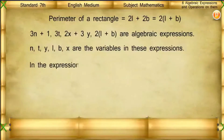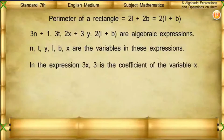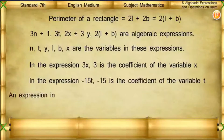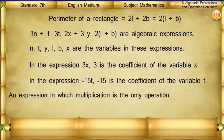In the expression 3X, 3 is the coefficient of the variable X. In the expression minus 15T, minus 15 is the coefficient of the variable T. An expression in which multiplication is the only operation is called a term.